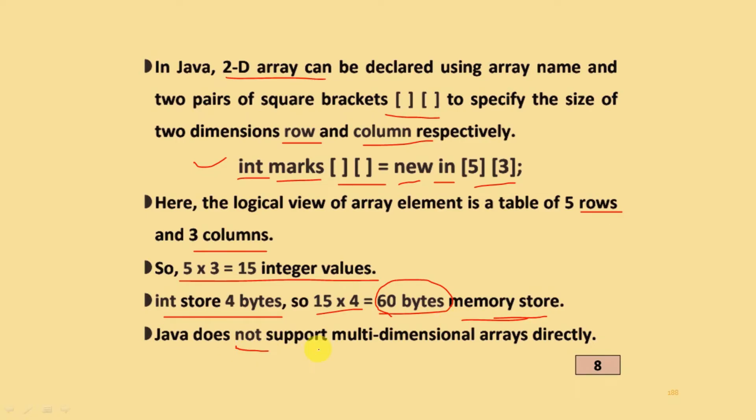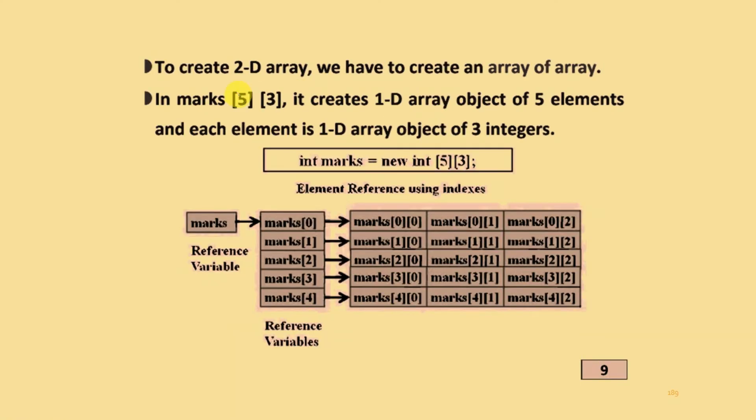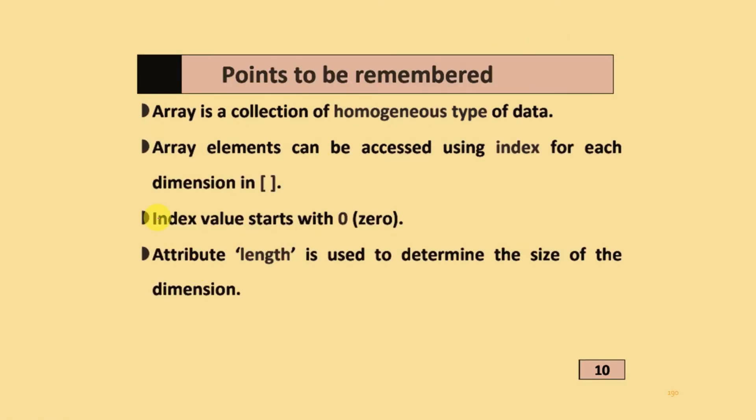Java does not support multi-dimensional arrays directly. To create two dimension array, we have to create an array of arrays. In marks[5][3], it creates one dimension array objects of five elements, and each element is 1D array objects of three integers.